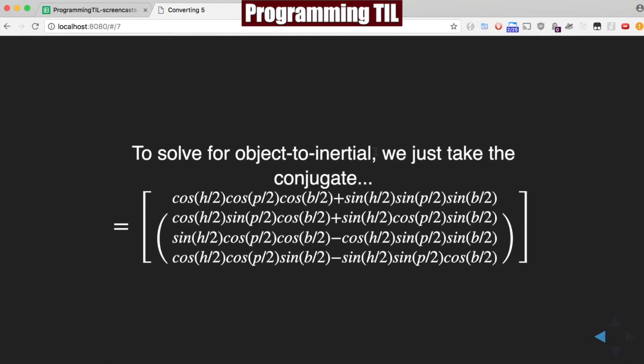To solve for the object-to-inertial, we can just take the conjugate. If you don't remember what a conjugate is, you should go ahead and take a look at that episode, back in the 20s somewhere.